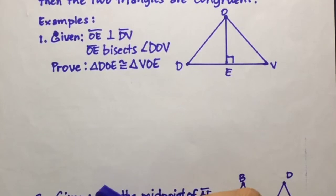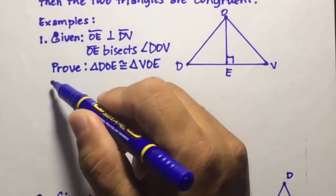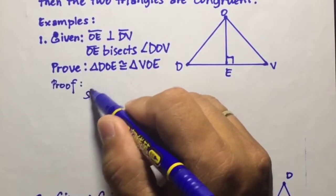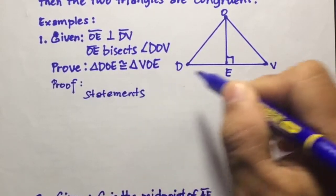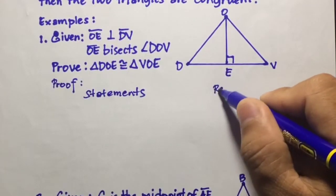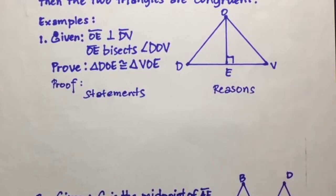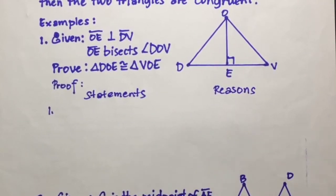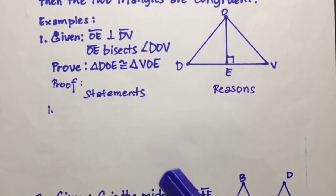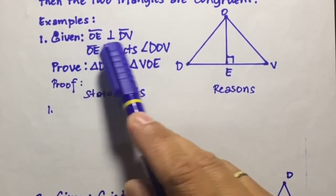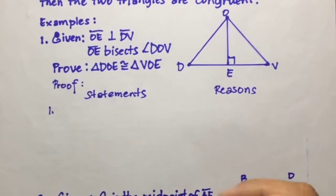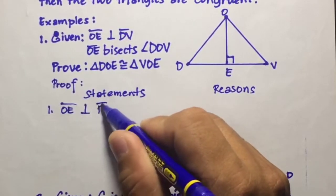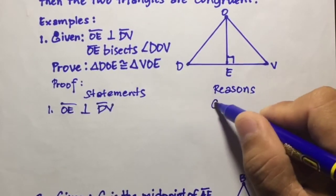For our solution, we're going to use the two-column proof, with the first column being statements and the second column being reasons. For our first statement, we use the given: line segment OE is perpendicular to line segment DV. The reason here will be: given.